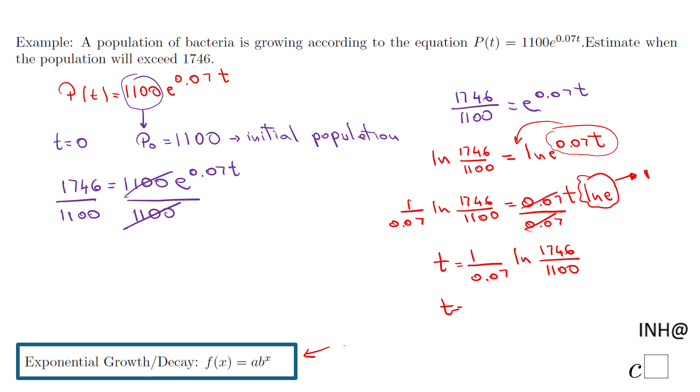I can put exactly what you see there, but I'm going to do it this way. I'm going to say natural log of 1746 divided by 1100, and then I'm going to divide this number by 0.07, and I end up with this value: 6.6.